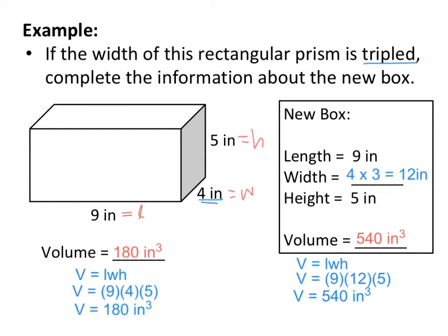Remember in our overview, we said that if we multiply one dimension by a scale factor, the volume will also be changed by the same scale factor. In this example, our scale factor was 3 because the width is being tripled. That means we didn't have to use the volume formula — we just take the volume of the old box, 180 inches cubed, and triple it. 180 times 3 equals 540 inches cubed, which verifies the statement.